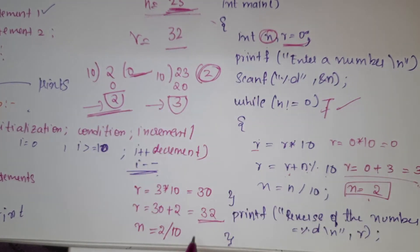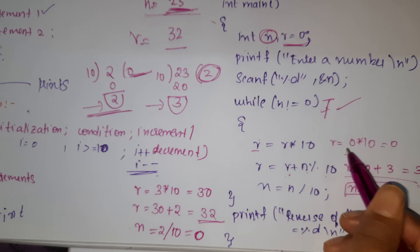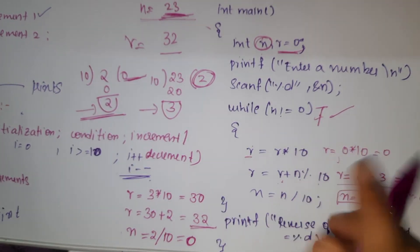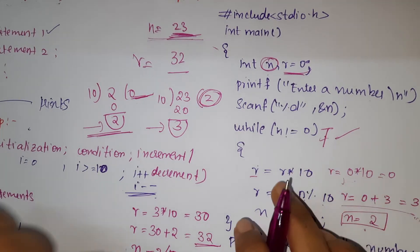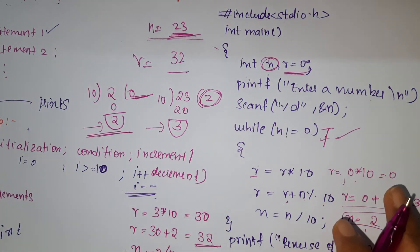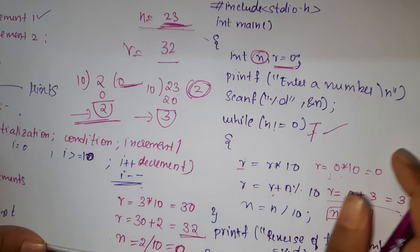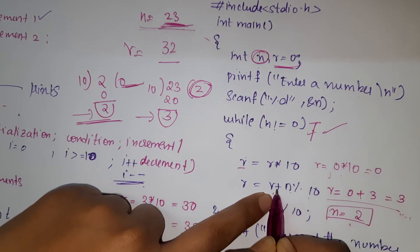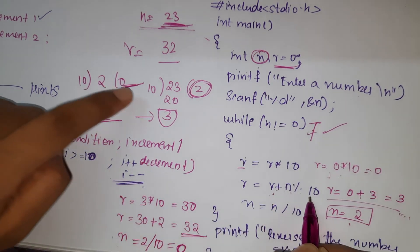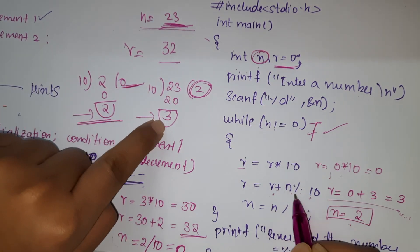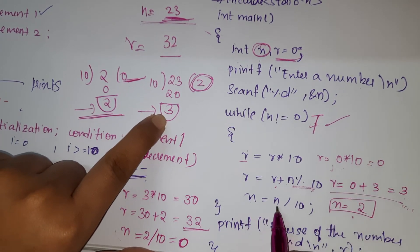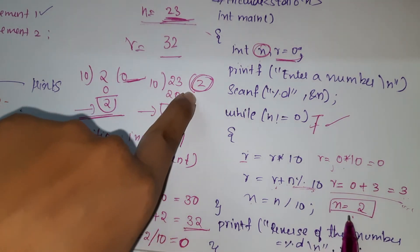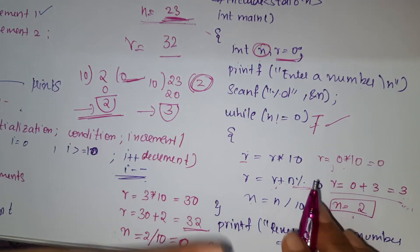Now the condition checks again: n equals 0, so the condition n not equals to zero is false. It comes out of the loop. Whatever answer we got — 32 — it prints. This is the logic for reversing an integer: first we initialize r to zero, then apply r equals r star 10 plus n percent 10 to get the remainder digit, and n equals n divided by 10 to get the quotient.